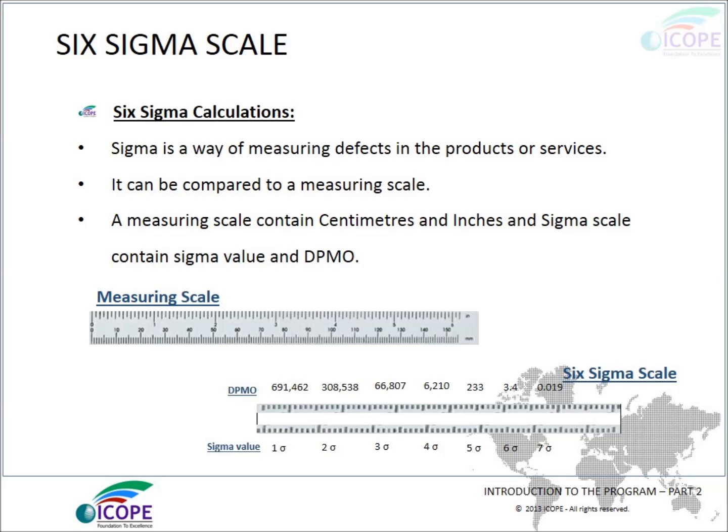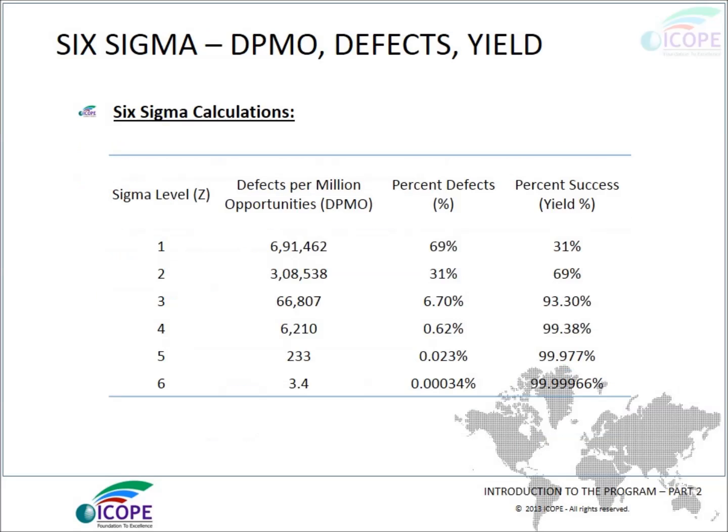The Six Sigma scale: Six Sigma is a measure of defects in products and services. It can be compared to a measuring scale — just as a measuring scale contains centimeters and inches, a Six Sigma scale contains a sigma value and DPMO. The following chart shows the sigma value (sometimes represented as Z), the defects per million opportunities, the percentage of defects, and the percentage of success or yield.